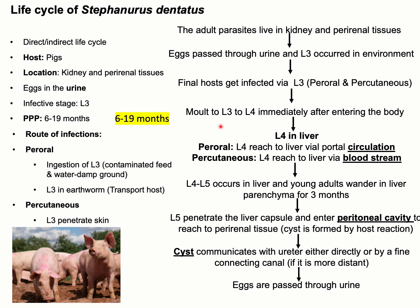Immediately after entering the body, L3 molts to L4, and these immature L4 stages migrate to the liver via circulation. In the liver, there is another molting from L4 to L5. The L5 stage wanders in the liver parenchyma for around three months. Finally, this L5 immature adult parasite penetrates the liver capsule and enters the peritoneal cavity to reach the perirenal tissue, which is the predilection site. A cyst is formed there by the host immune reaction, communicating with the ureter directly or via a fine connecting canal. The female parasite then lays eggs passed through the urine. Completion of this life cycle takes around six to nine months.